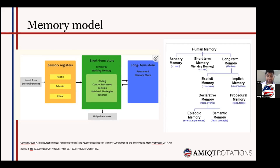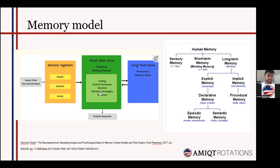The short-term memory storage has many components, but there is an important subtype called working memory. The term working memory refers to a system that provides temporary storage and manipulation of the information necessary for tasks such as maintaining a conversation. A simple task such as maintaining a conversation is actually a cognitively demanding task because it requires language comprehension, learning, reasoning, and maintaining attention.